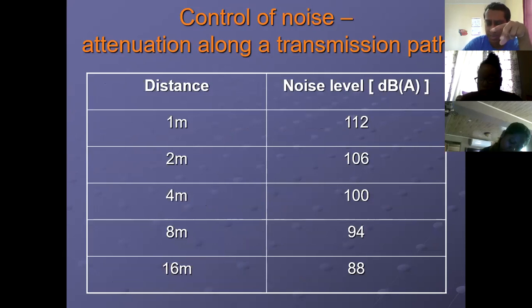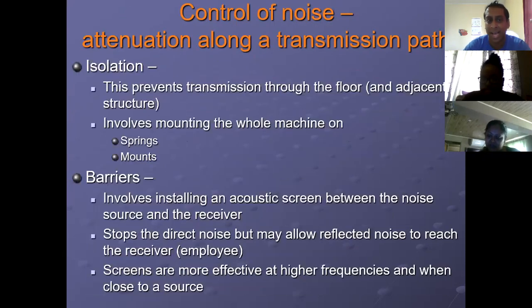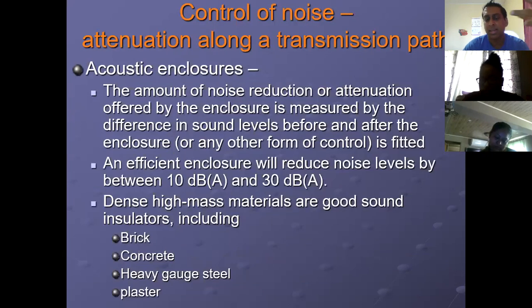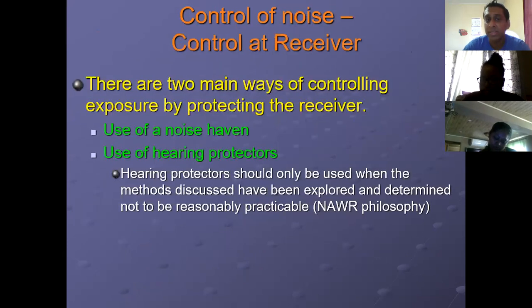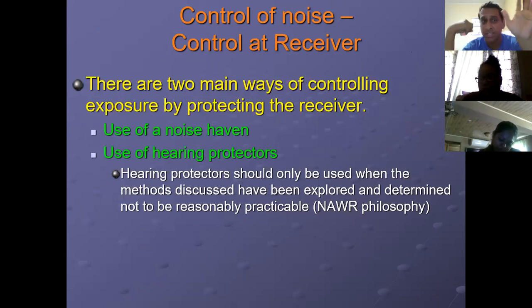The acronym is STD - Shielding, Time, Distance. Shielding is like a barrier. So STD: shielding, isolation, time, distance. A receiver is any form of control at the receiver end. Counting the methods, you have maintenance, elimination, shielding, time, distance - that's five. Administrative control is another. And this could include the use of noise havens and the use of hearing protection. So that's about seven methods.